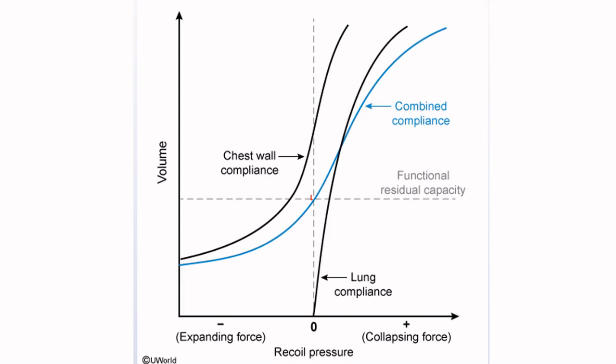The black dot represents the point at the end of normal tidal expiration. After you exhale the resting tidal volume, the volume remaining in your lungs is called the functional residual capacity. When exam questions ask about this curve, they want you to understand that the continuous opposing forces — the chest wall always expanding and the lung always collapsing — create a continuously negative intrapleural pressure. Questions will ask you about the value of intrapleural pressure at that point.